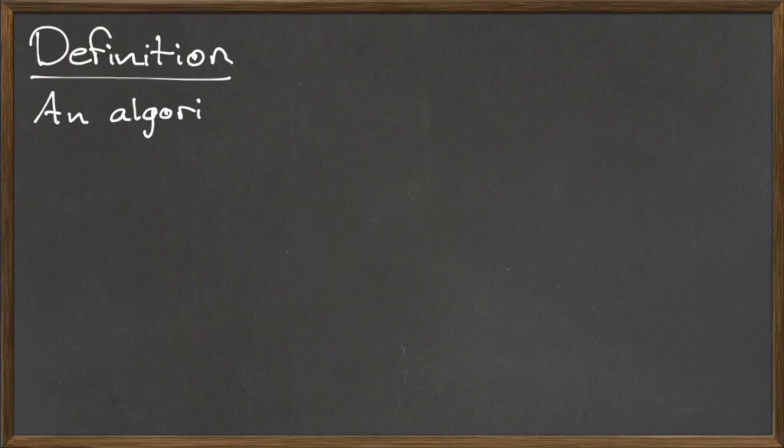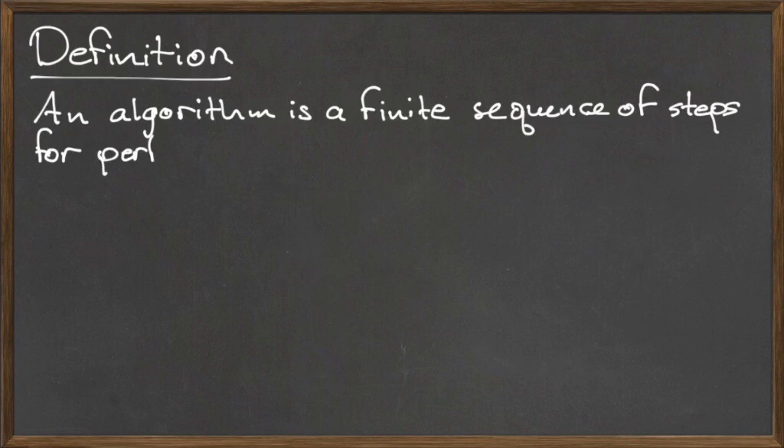An algorithm is a finite sequence of steps for performing a task. By finite, we mean that the algorithm ends eventually and does not continue to run forever.